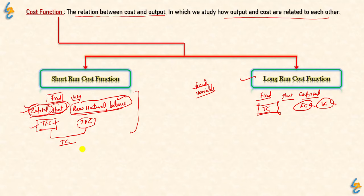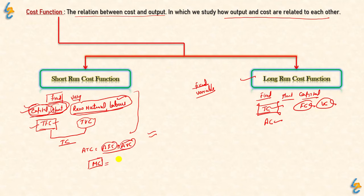Let's recap what happens in the short run. We have average total cost, which equals average fixed cost plus average variable cost. We also have marginal cost. When we produce extra units, what happens to marginal cost in the short run? Marginal cost equals change in total cost upon change in output.